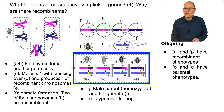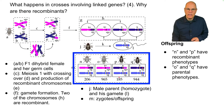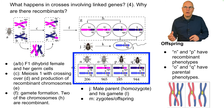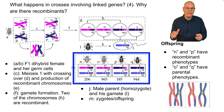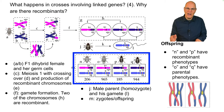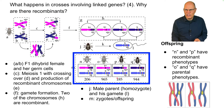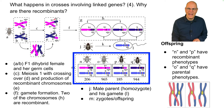Why are there so many more parental than recombinant phenotypes? It's because crossing over happens at a rate dependent on the distance between alleles on the chromosome. The closer two alleles are, the less they'll tend to cross over. This frequency — approximately 17% — represents the distance between the B allele and the VG allele on the fruit fly's chromosomes.